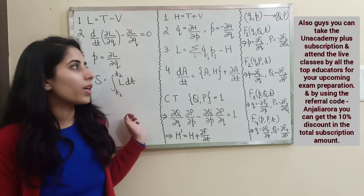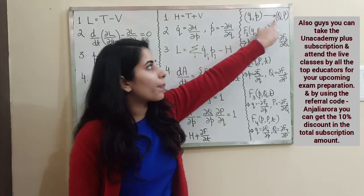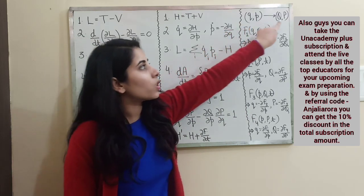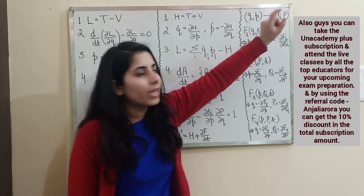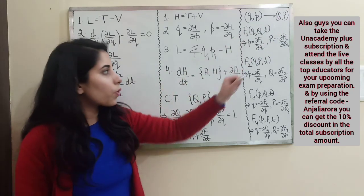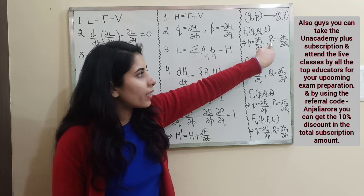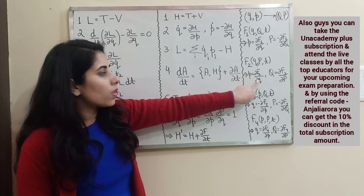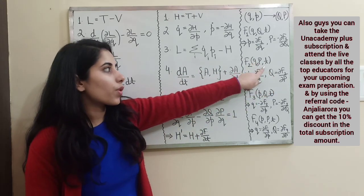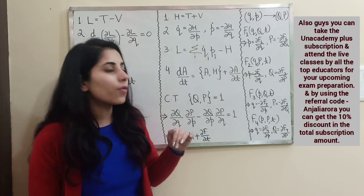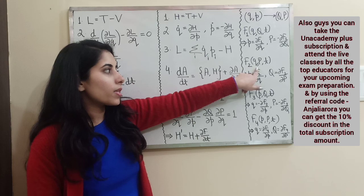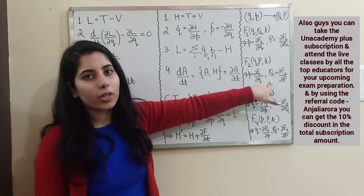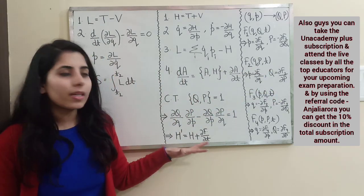Regarding the sign convention for generating functions involving small q, small p, capital Q, and capital P: the first and last — small q and capital P — will be negative, and the remaining two will be positive. Also, in any generating function, if a coordinate is not present, you write the formula for that coordinate. For example, if small q is present but small p is not, write the formula for small p.